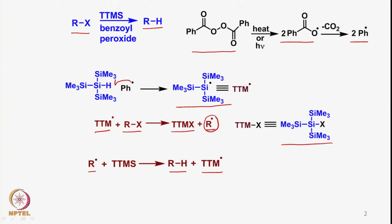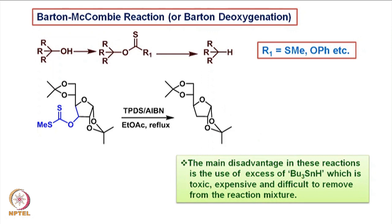We also looked at the Barton–McCombie reaction, also known as Barton deoxygenation, in which a hydroxy compound is converted to the corresponding hydrocarbon. This is particularly useful for converting tertiary hydroxy compounds, replacing the C–OH bond with a C–H bond via the corresponding thiocarbonyl compound where R1 is S-methyl, O-phenyl, etc. This was demonstrated using a sugar-derived thiocarbonyl compound converted to the corresponding deoxygenated product.